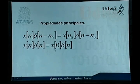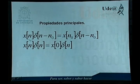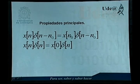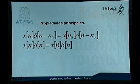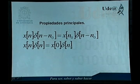Sus propiedades principales van a ser las siguientes. Primera propiedad: x de n por delta de n menos n sub 0 es igual a x de n sub 0 por delta de n menos n sub 0. Esta propiedad nos dice que si multiplicamos una entrada x de n por la función de impulso unitario con centro en n sub 0, lo que vamos a obtener es el valor de la entrada evaluada única y exclusivamente en n sub 0. Esta es una de las propiedades principales del impulso unitario, pues permite relacionar la multiplicación de la entrada por el impulso con un solo valor de la entrada. Si sustituimos n sub 0 igual a 0 obtenemos que x de n por delta de n es igual a x de 0 por delta de n.